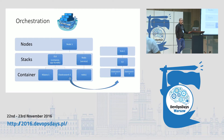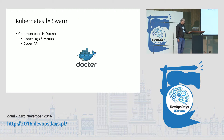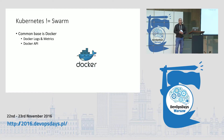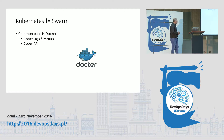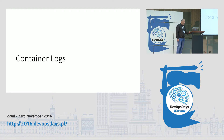Kubernetes is not like Swarm in terms of functionality and how it works. The common base is Docker, and therefore I'd like to start with Docker logs and metrics and the Docker API and give you some detailed examples.